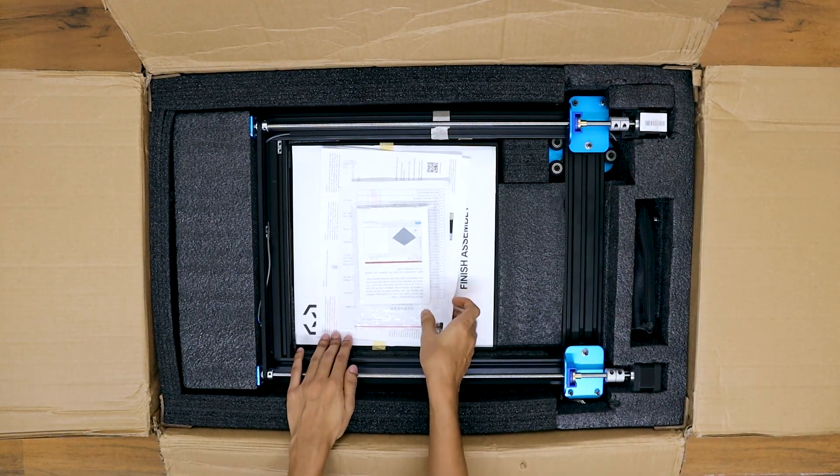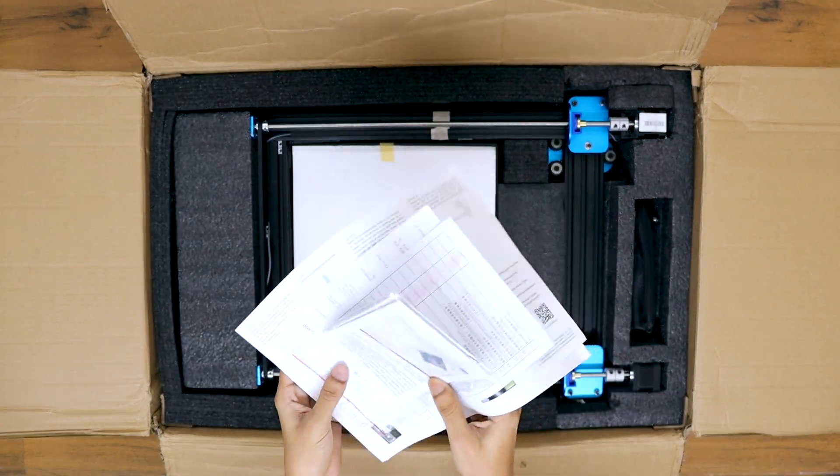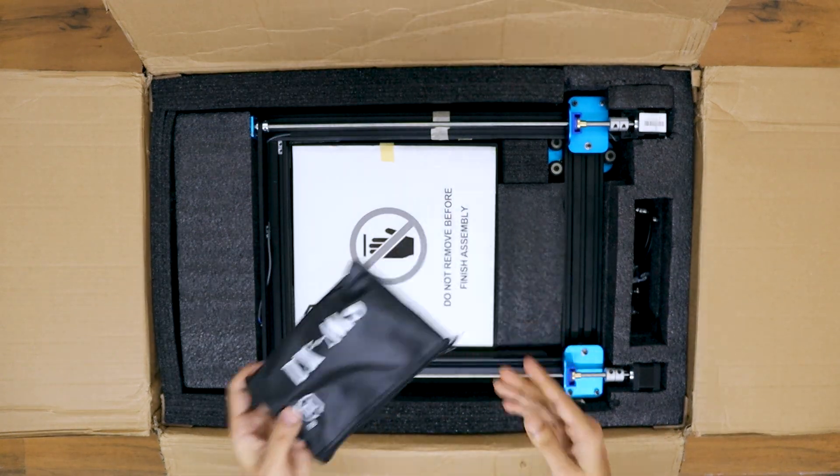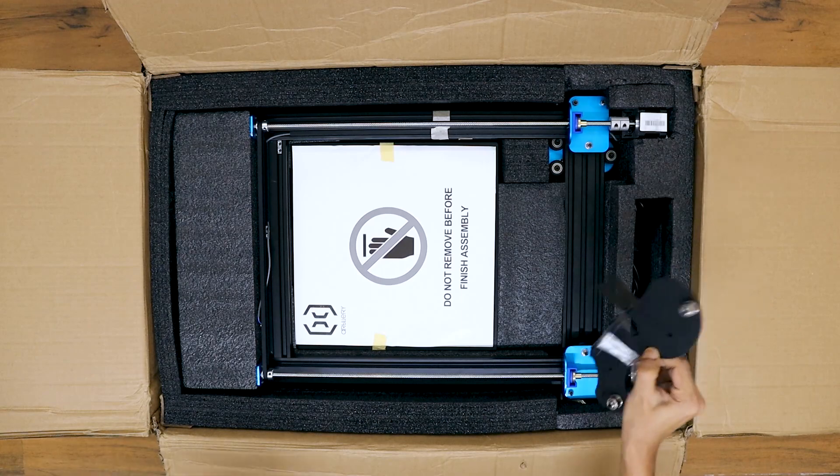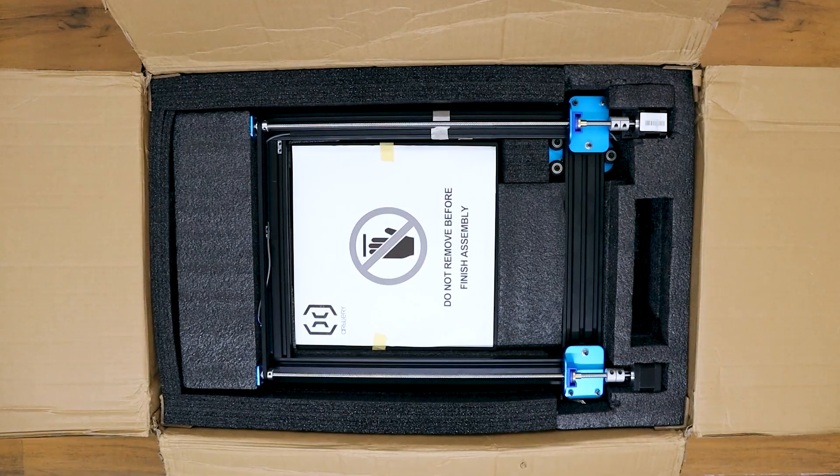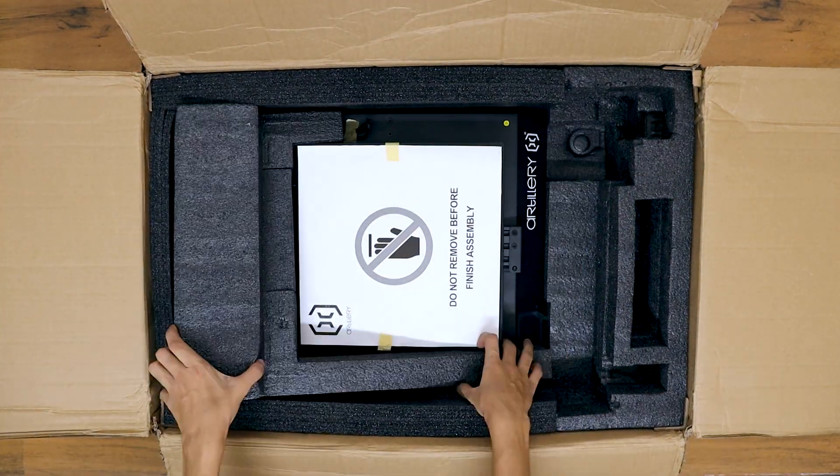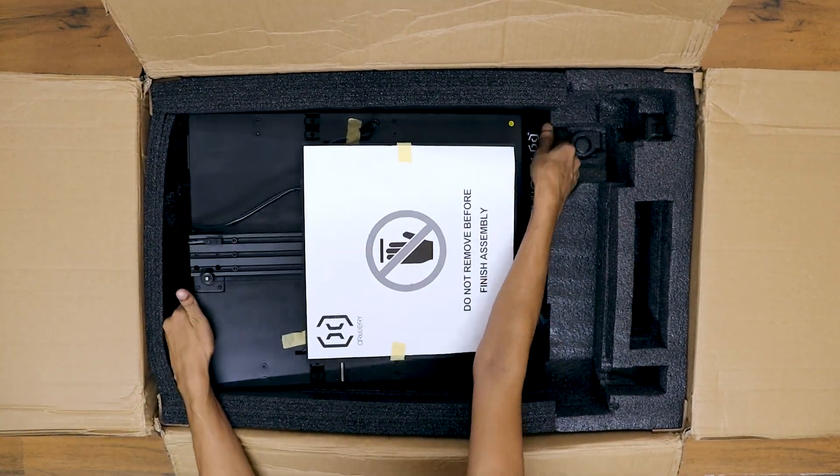Alright, here we have some paperwork and instruction manual, then a nice little pouch of assembly tools and some spare parts. Next we have the spool holder, then the power cord. Now we have the fully assembled entire gantry, and lastly the main printer base where all the electronics are mounted.